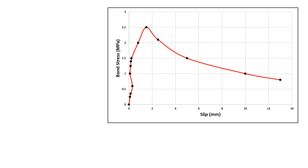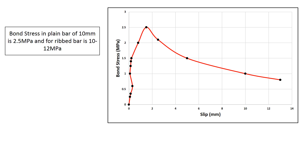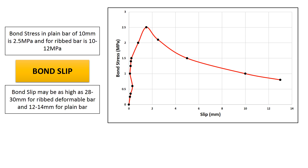A beautiful representation of the buildup of bond stresses on application of pullout load can be seen here. The value of bond stress is higher in ribbed bars, ranging around 10 to 12 MPa. For a general 12 mm bar, the bond slip can be as high as 28 to 30 mm in ribbed bars before failure initiates.